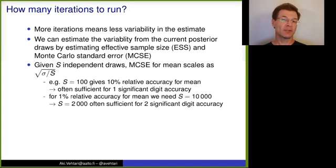But actually, if we accept some variation in the last digit, so that if we would repeat the computation, it could be one smaller or one bigger, then often 2,000 would be sufficient for these two significant digit accuracy. And this is actually quite close to Stan's default.